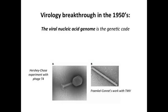In the 1950s, the breakthrough in virology was the demonstration that the nucleic acid of the virus is the genetic code. Even though this sounds obvious today, it wasn't back then. People thought that the proteins might be the important parts because they were so much more complicated. Nucleic acids were simple — they only had four different chemicals in them.